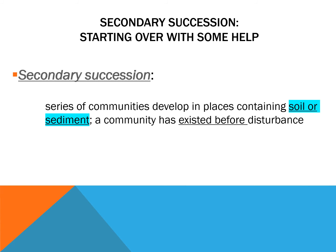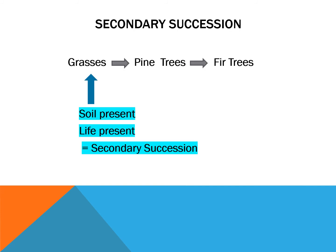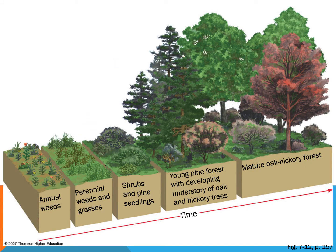Secondary succession is really the exact same thing — it just starts from a point where there's already some soil or maybe a little life left. This would be after a forest fire where there's still some soil, maybe some little sapling trees still going. Or maybe a forest is cut down for farming and the farmer abandons the farm — there's still some soil and some life left. It's the same process, just starting from a different point with some soil present. The weeds do things that improve the soil, so other seeds can germinate and grow.